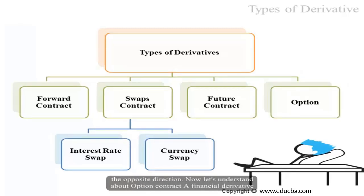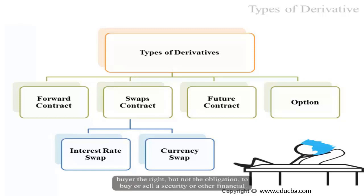Now let's understand options contracts. A financial derivative that represents a contract sold by one party to another is an options contract. It offers the buyer the right, but not the obligation, to buy or sell a security or other financial asset at an agreed-upon price during a certain period of time or on a specific date.